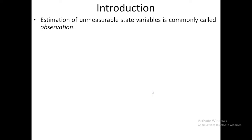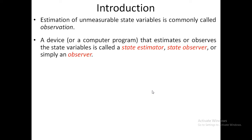We estimate all unavailable state variables. The estimation of unmeasurable state variables is commonly called observation, and a device or computer program that estimates and observes the state variables is called a state estimator, state observer, or simply an observer.